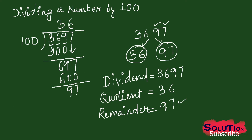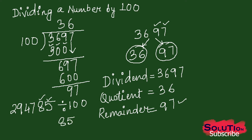So if I write another number — let me make it a bigger number. This is my number, and if I am dividing it by 100, what will be the quotient and remainder? It is very easy to find. Just separate the digits in the ones place and tens place and write them separately. That is 85, written separately. So the quotient is 2947 and the remainder is 85.